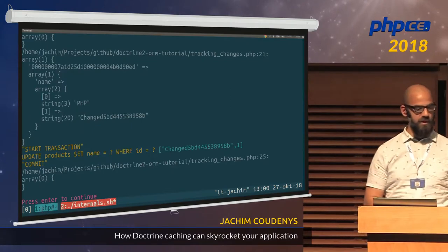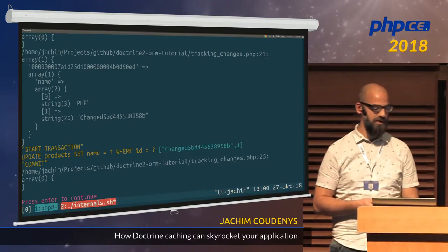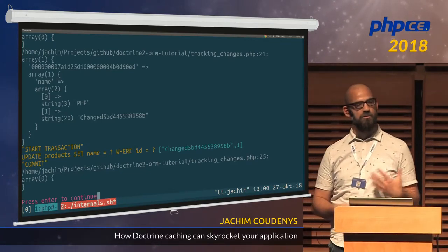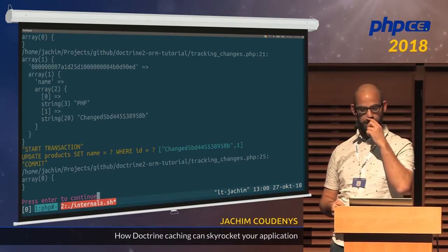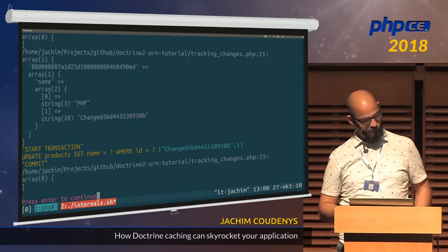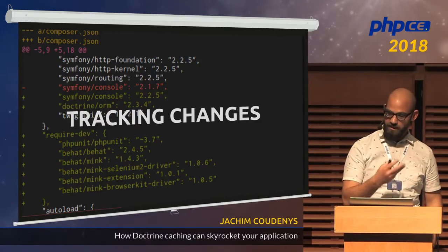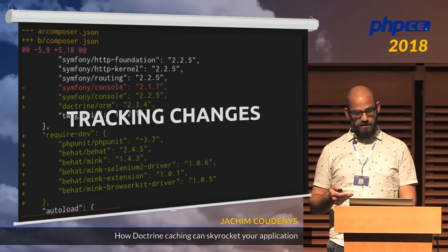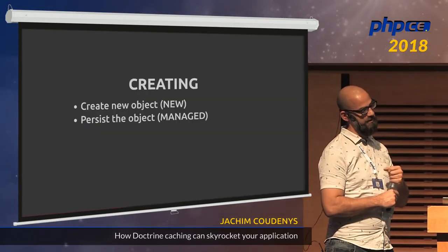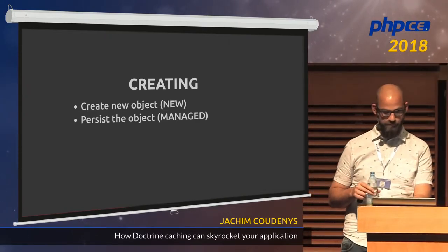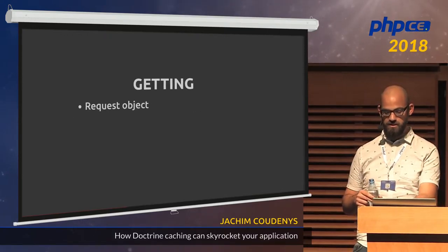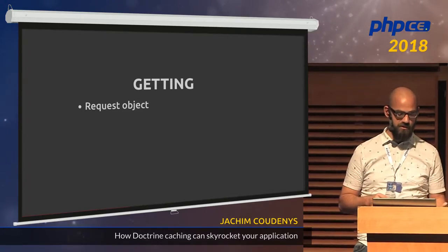So Doctrine has to do some tracking to know what things have changed. Very quickly: if we create an object, it's new. We persist it by calling the persist method, then it gets managed. We do a flush, and the Unit of Work knows it has to calculate and execute an insert statement inside a transaction. If we get an object from the entity manager, it first looks in the identity map, and if not found there, does a database query, hydrates the object, and saves it to the identity map as managed. If we update that product, we get it from the entity manager, change it, call flush, and the Unit of Work knows it has to create an update statement.